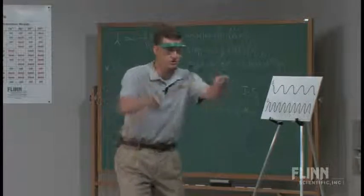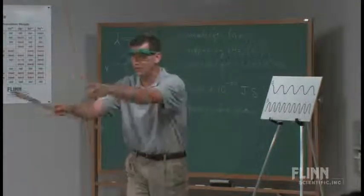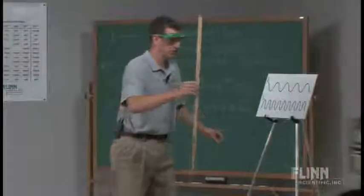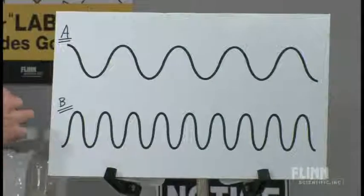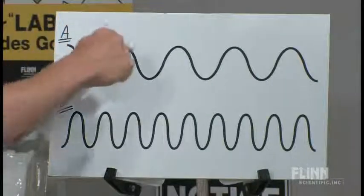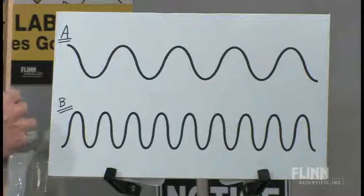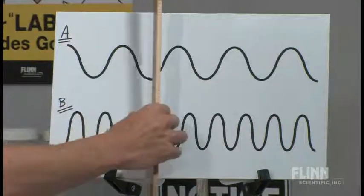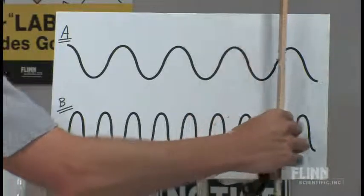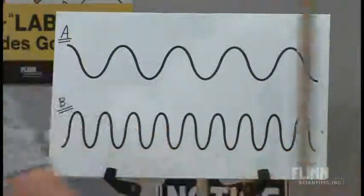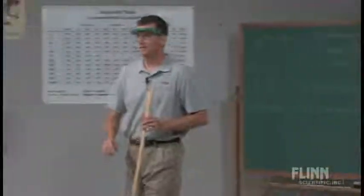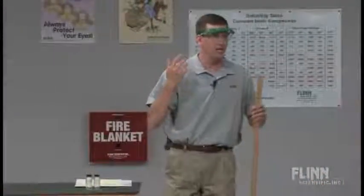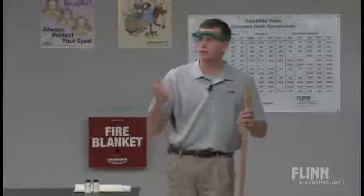Are you ready? What side of the room, your what letter? A. And you guys are? B. So here we go. When I pass a crest, a crest being the top part of the wave. Ready? Set. Go. A. B. B. A. Now we can work on our harmony on that, right? But what is it that the students are hearing? They're hearing frequency.